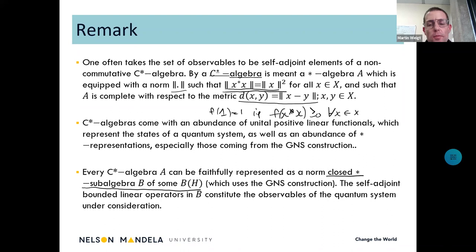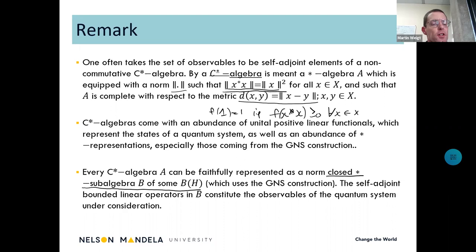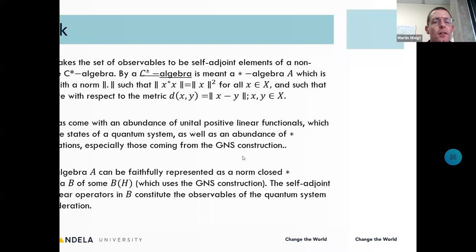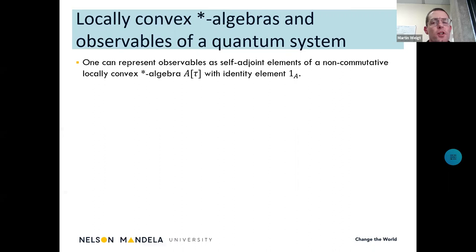The self-adjoint bounded linear operators constitute the observables of the quantum system. However, there is a problem: in Schrödinger's theory, operators are generally not bounded. So one cannot really use a C-star algebra to model the observables unless you want to reformulate the Heisenberg commutation relation in terms of the Weyl commutation relations.